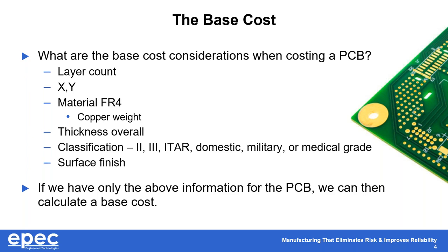The material — typically FR4 — and the copper weight of that material. The overall thickness of the PCB is measured from top to bottom, usually over solder mask and metal plating, sometimes over exposed metals, and occasionally over the FR4. The classification can start with Class 2, Class 3, ITAR, domestic military, or medical grade. Of course your surface finish as well. If we only have these items, we can then calculate the base cost of the PCB.